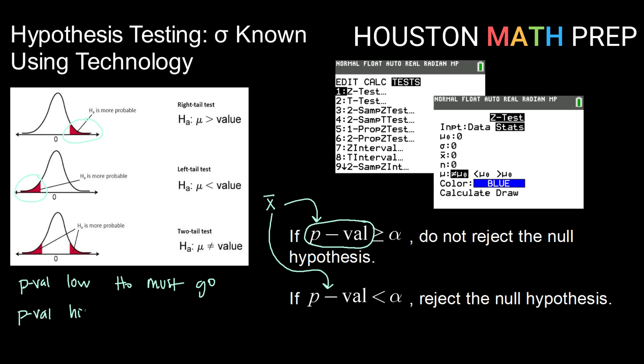If your p-value is high, then h0 will fly. So if your p-value is greater than your alpha, then your null hypothesis is fine. You don't need to reject it. So how do we get this p-value that we're talking about?